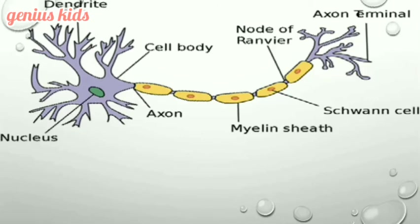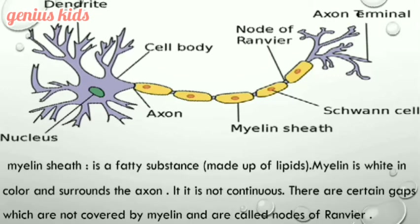In this slide you can see the parts of the multipolar neuron, where the nervous message travels along it from dendrite, cell body, axon, and terminal arborization. Along the axon, there is a fatty substance made up of lipids with a white color called myelin.